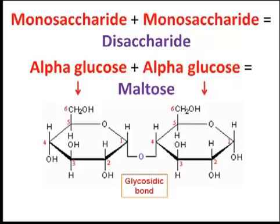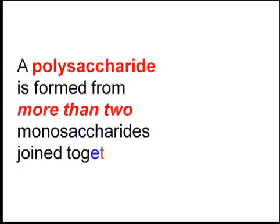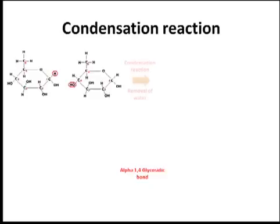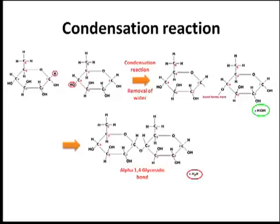So what would a polysaccharide be? A polysaccharide is formed from more than two monosaccharides joined together. A hydrogen atom from one monosaccharide bonds to the hydroxyl group (OH) of the other monosaccharide, releasing a molecule of water. The glycosidic bond is formed between carbon-1 of one molecule and carbon atom 4 of the other, so we would call this an alpha 1-to-4 glycosidic bond. This reaction is called a condensation reaction.